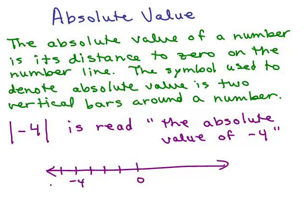That's where negative 4 would be. So what we're looking for is its distance to zero. So how many spaces is that? It's basically one, two, three, four spaces. So then we say the absolute value of negative 4 is just the number 4 because it's four spaces from zero.